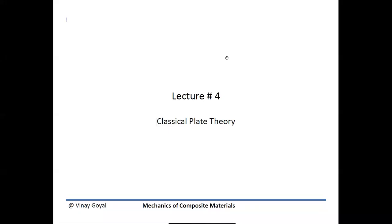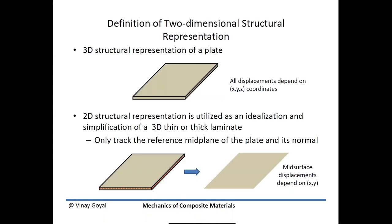Welcome to Mechanics of Composite Materials. We'll be discussing classical plate theory. When you're modeling large-scale structures with finite elements, you may have to use 3D elements, which are quite computationally expensive. For example, the skin of an aircraft is fairly thin. Instead of modeling it through the thickness direction with many elements, we will idealize the 3D structural representation as a surface.